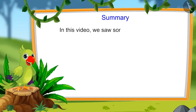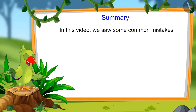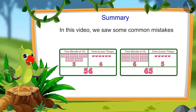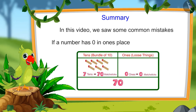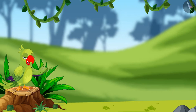So, children, that is all for today. In this video, we saw some common mistakes that we should avoid. For instance, 56 and 65 are not equal. And if a number has 0 in the ones place, it does not mean 10. I sincerely hope that you have understood this topic. Bye, friends!